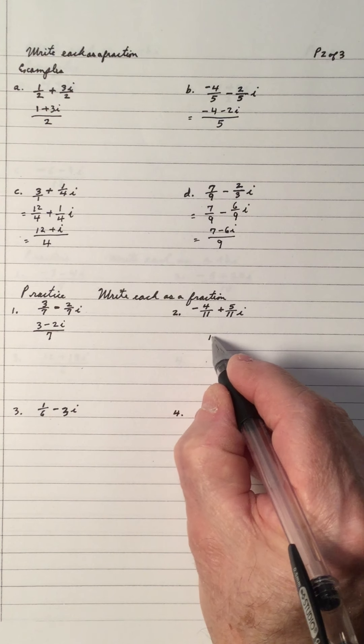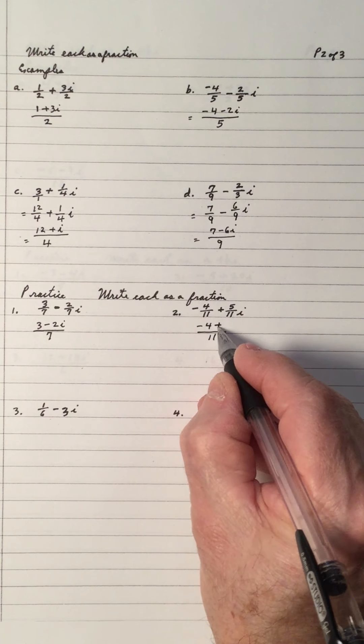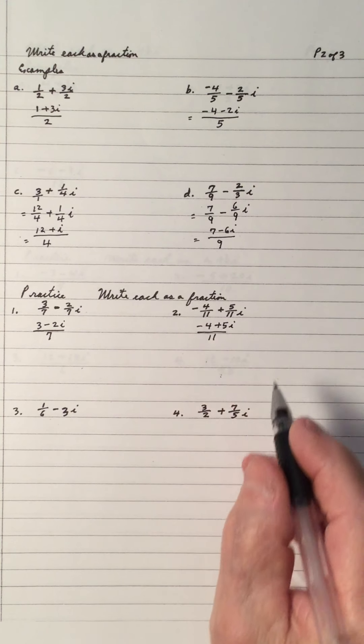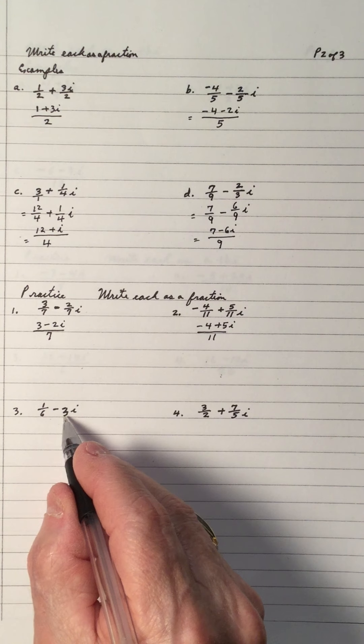Common denominator is 11. Write it down. So, we get a negative 4 plus 5i. And number 3, 6 plus 3i.